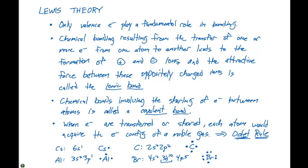Using the foundations from Lewis theory and looking at these Lewis structures showing the valence electrons, we can now start to investigate how bonding is going to work. In the next two videos, we'll talk about ionic and covalent bonding and how we can use these Lewis structures to represent the bonding that happens when a compound forms.